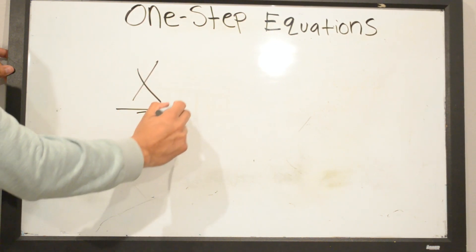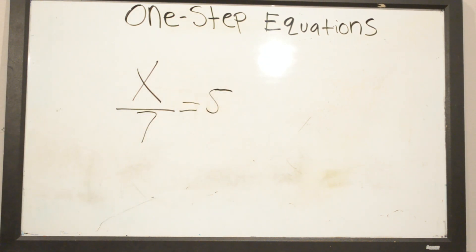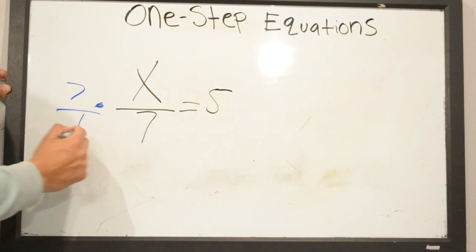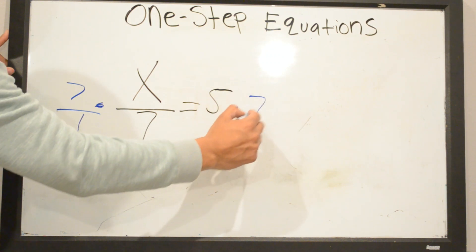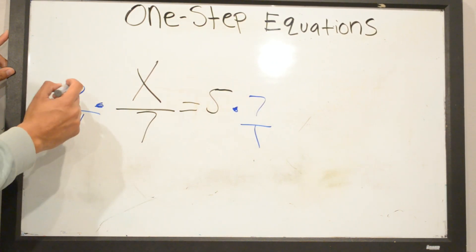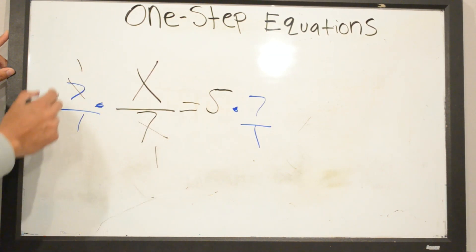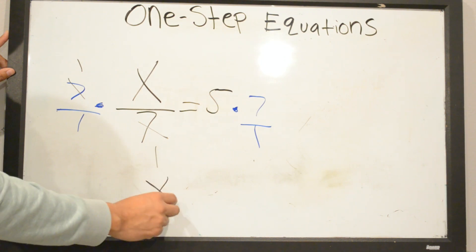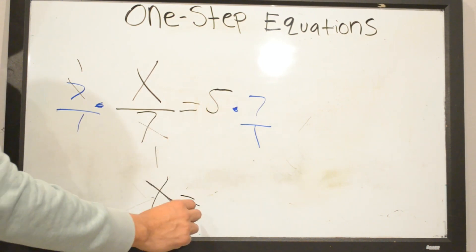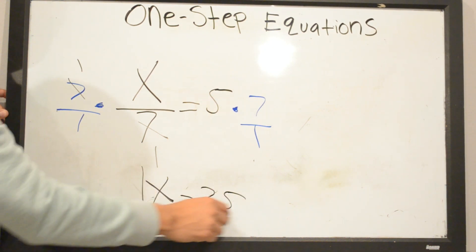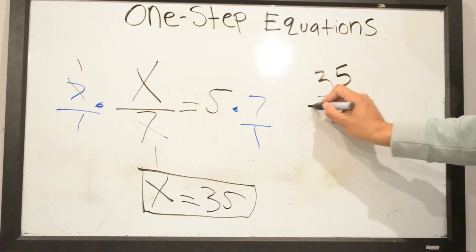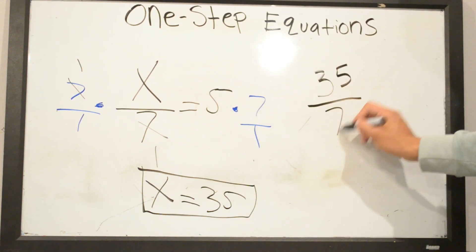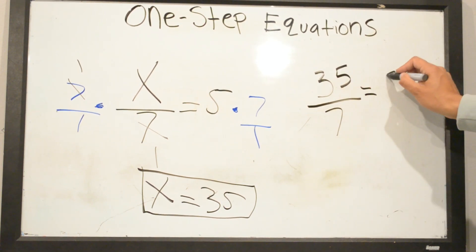X divided by 7 equals 5. To get rid of the division we multiply by 7 over 1. Whatever we do on one side of the equal sign we have to do on the other side. 7 over 7 cancels, leaving X by itself. X equals 5 times 7 equals 35. To check your work, plug in 35 for X: 35 divided by 7 equals 5.